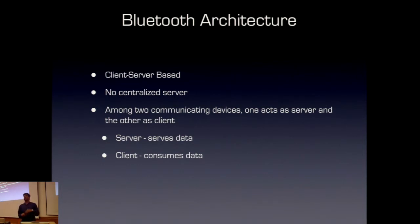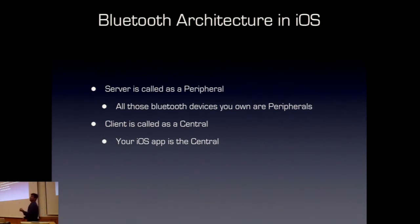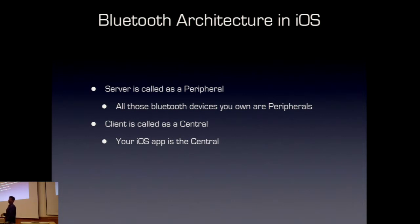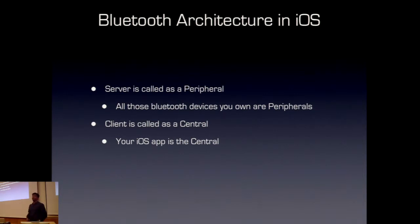In Bluetooth parlance, you don't call them server and client — you call them peripheral and central. Servers are called peripherals. Peripherals can be your thermostats, glucose monitors, blood pressure monitors — anything that has data someone is interested in. All those Bluetooth devices you own — your Jawbone, your Fitbit, your health trackers, your heart rate monitor — they are all Bluetooth Smart peripherals. Clients are called centrals. Some gym equipment can read heart data from your heart rate monitor — that's a central.